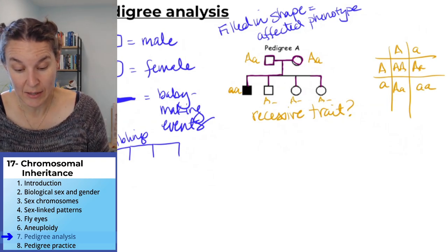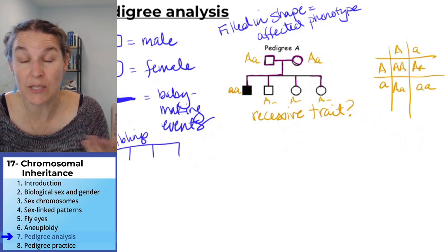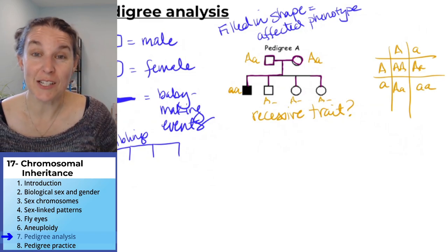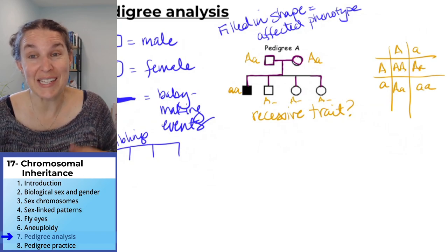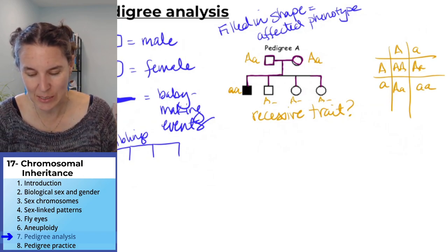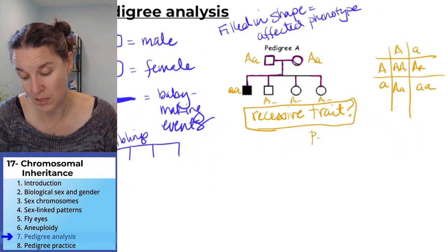In fact, possible and the numbers, the percentages match up. Keep in mind, the percentages are probabilities, so it doesn't have to match up. That's not a slam dunk. But I would say that this is possible, that it's an autosomal recessive trait. Should we see if it's possible for it to be a sex-linked recessive trait? Let's see.